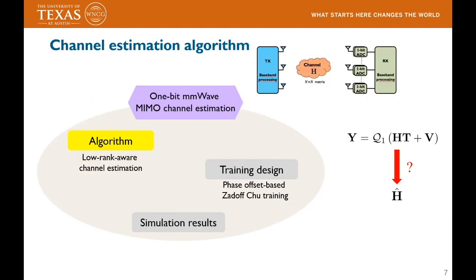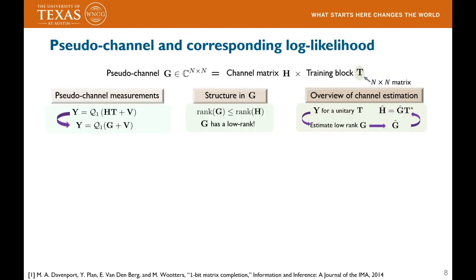In this section, I'll talk about some of the algorithms we developed for this purpose. First, I'll introduce the notion of the pseudo-channel and its corresponding log-likelihood function. The pseudo-channel matrix G is defined as the product of the channel matrix H and the training block T. Note that this pseudo-channel G is a complex matrix of size N×N. The definition of the pseudo-channel allows for a simpler measurement model: the received block Y is simply a 1-bit quantized version of the noisy pseudo-channel. An interesting property of the pseudo-channel is its low-rank structure, which follows directly from the low-rank nature of the channel H.